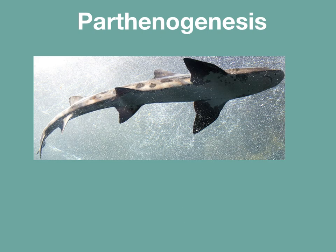Some animals, like fish, birds, and reptiles, are able to switch from sexual reproduction to asexual reproduction. They do this by creating offspring from unfertilized eggs. This is called parthenogenesis. The genetic material of the offspring are identical to the parents. For example, in January 2017, a leopard shark in an Australian aquarium that had no contact with a male shark gave birth to offspring that were genetically identical to her.